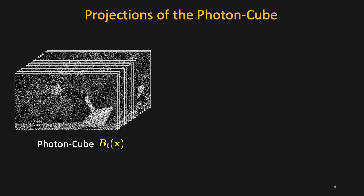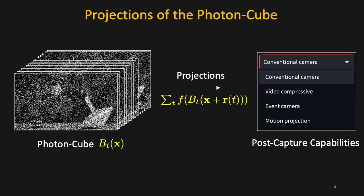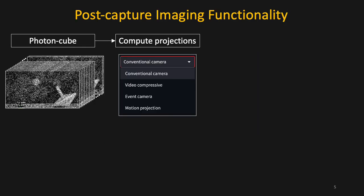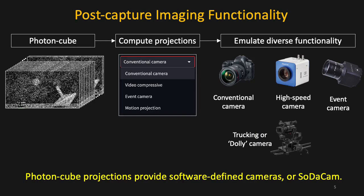We show that simple linear and shift transformations of the photon cube or photon cube projections can computationally emulate a wide variety of imaging modalities after the fact. These modalities include conventional intensity cameras, high-speed compressive cameras, event cameras, and event cameras that move during exposure.